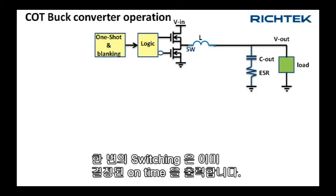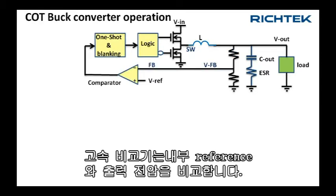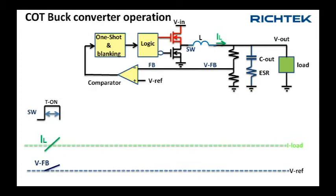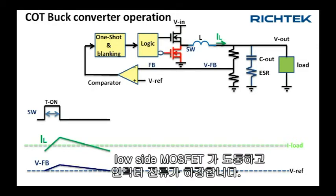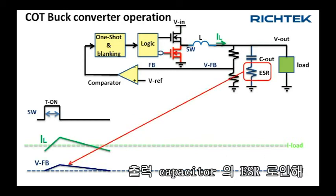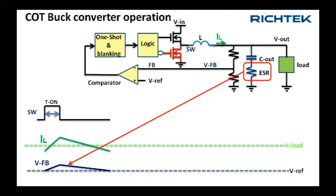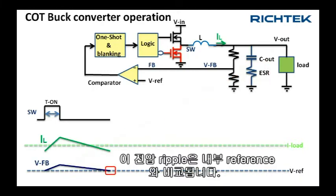A one-shot provides the on-time. A high-speed comparator compares a portion of the output voltage with an internal reference. A fixed on-time is generated and inductor current rises. When the on-time has expired, the low side MOSFET conducts and inductor current drops. Due to the output capacitor ESR, the voltage ripple on the output has a similar shape as the inductor current. Via the feedback network, this voltage ripple is compared with the internal reference.